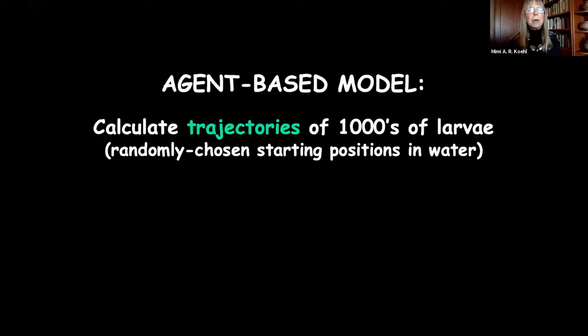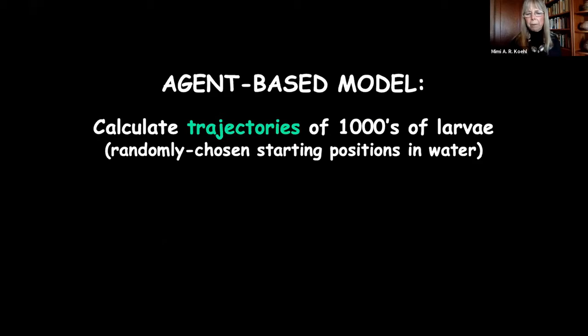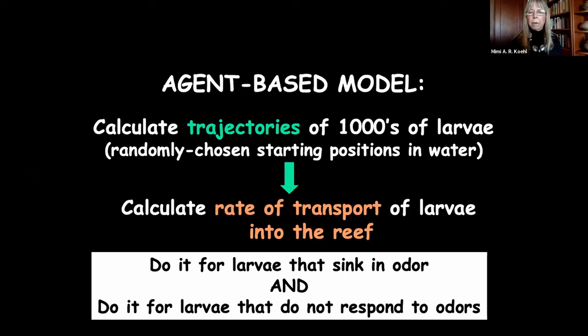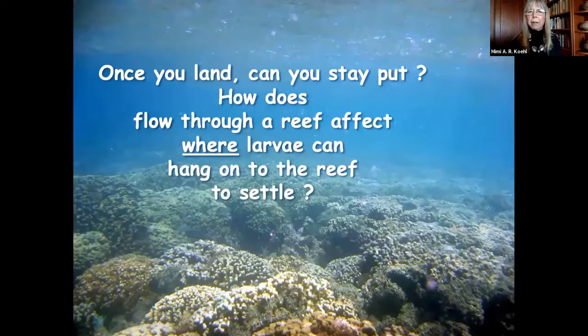The larva is tiny and carried in the water around it, so we take the vector sum of its velocity and the local instantaneous ambient water velocity. We do an agent-based model calculating the trajectory of thousands of larvae at randomly chosen starting positions in our flow data and calculate the rate of transport of larvae into the reef. Comparing larvae that sink in odor versus larvae that do not respond to odors, in turbulent wavy flow the model predicts that this simple behavior of sinking in cue enhances transport rates into the reef by about 20 percent.